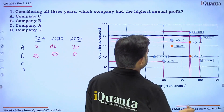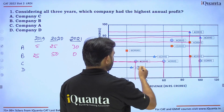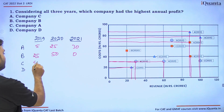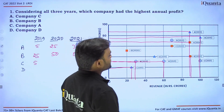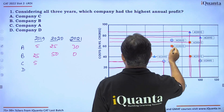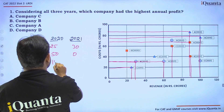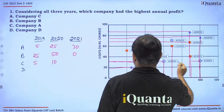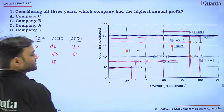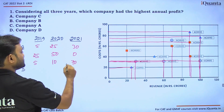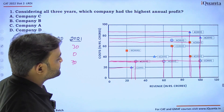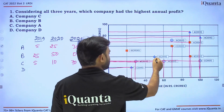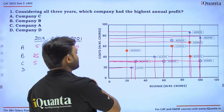For C in 2019, revenue is 25 and cost is 25, so zero crores profit. For C in 2020, it's 70 minus 60, which is 10 crores profit. For C in 2021, it's 100 minus 30, which equals 70 crores profit. For D in 2019, it's 50 minus 40, giving 10 crores profit.